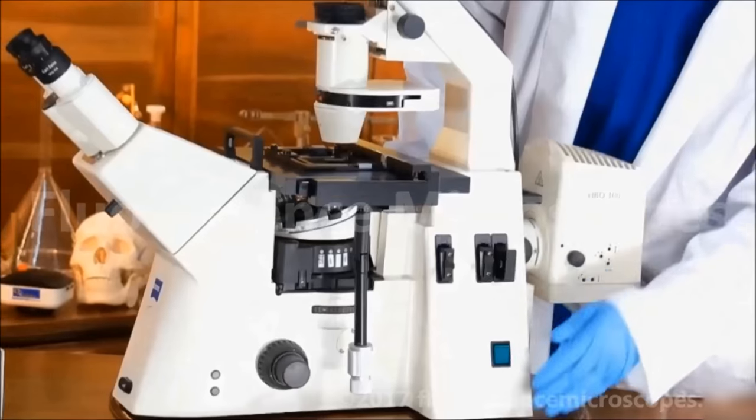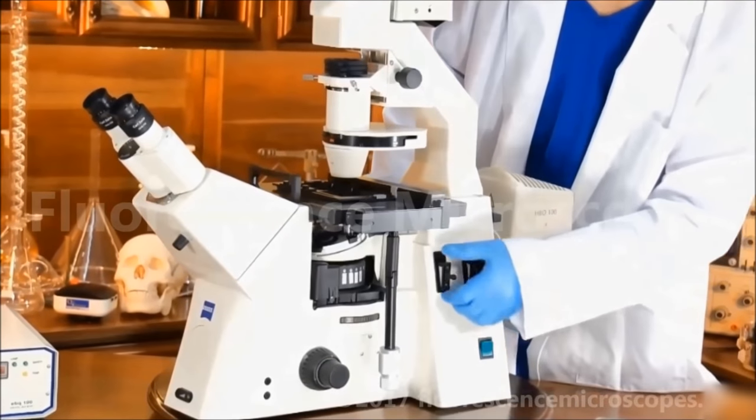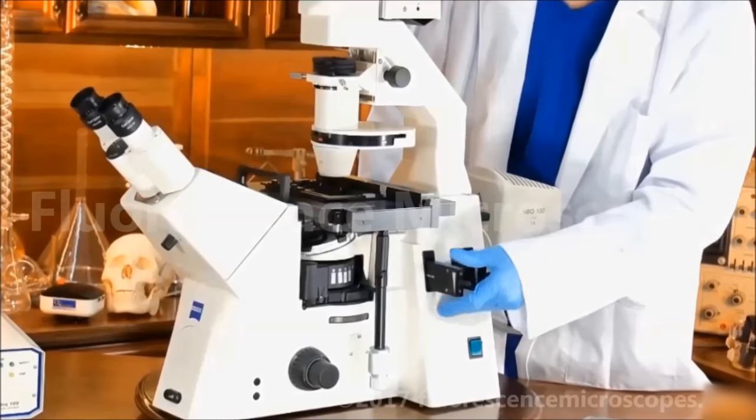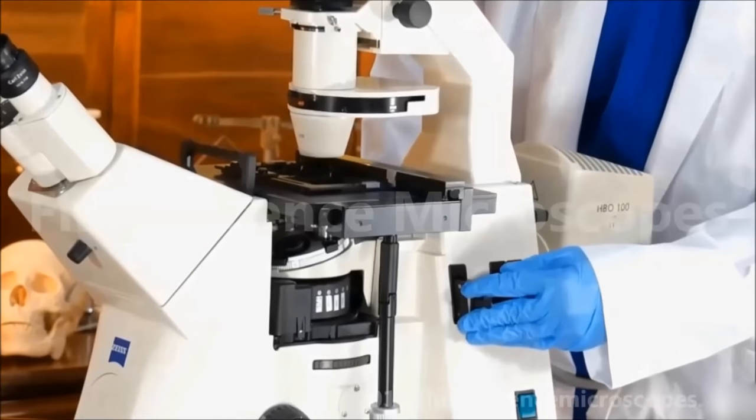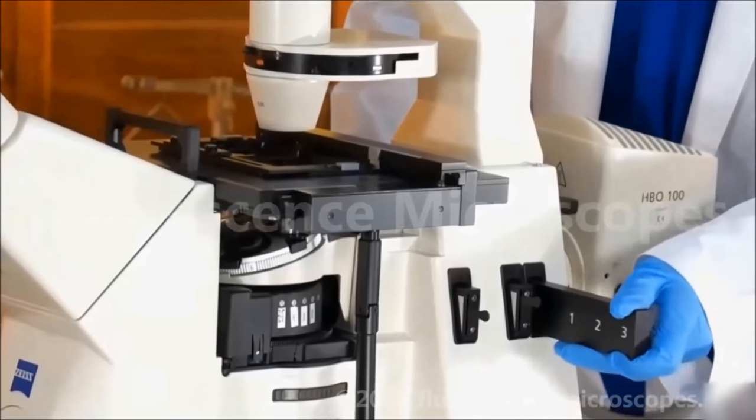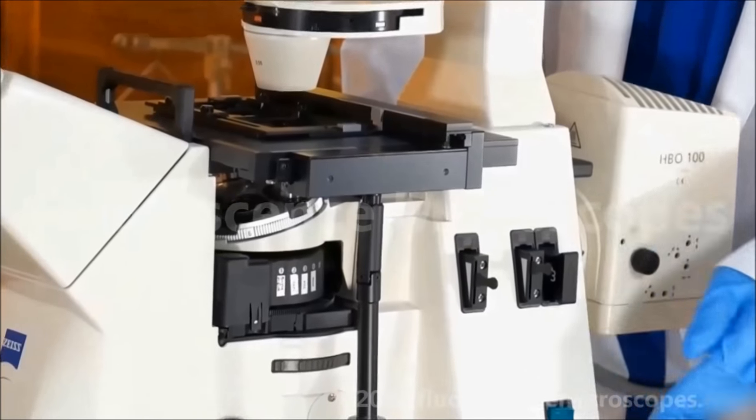This button turns on the halogen lamp. This is the halogen lamp. These are your diaphragms, iris diaphragms, field stop and aperture stop, and you've also got your sliders where you can put different filters in.